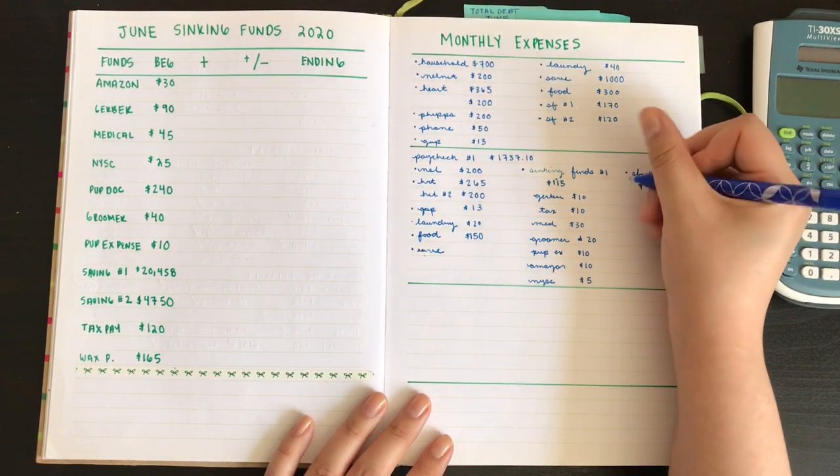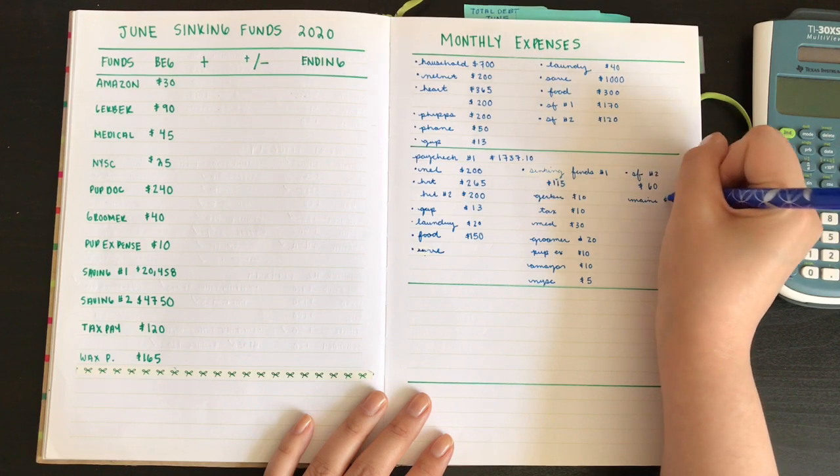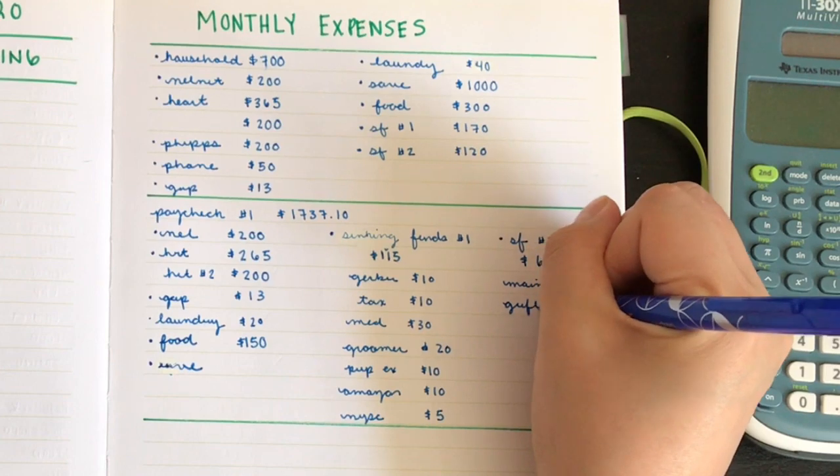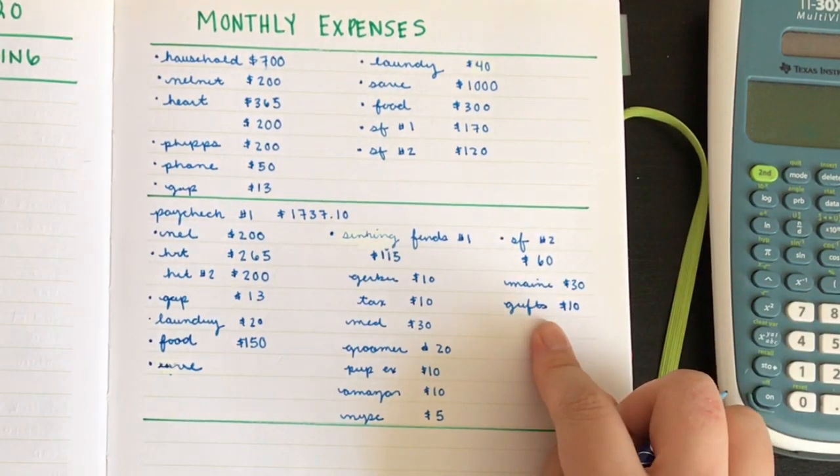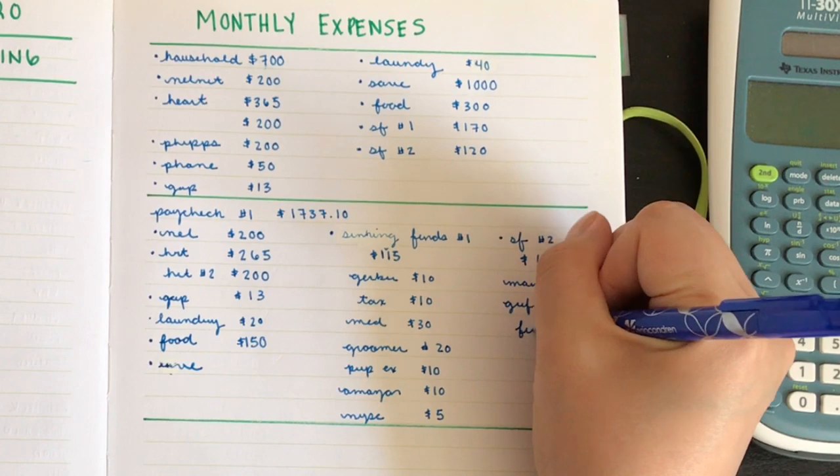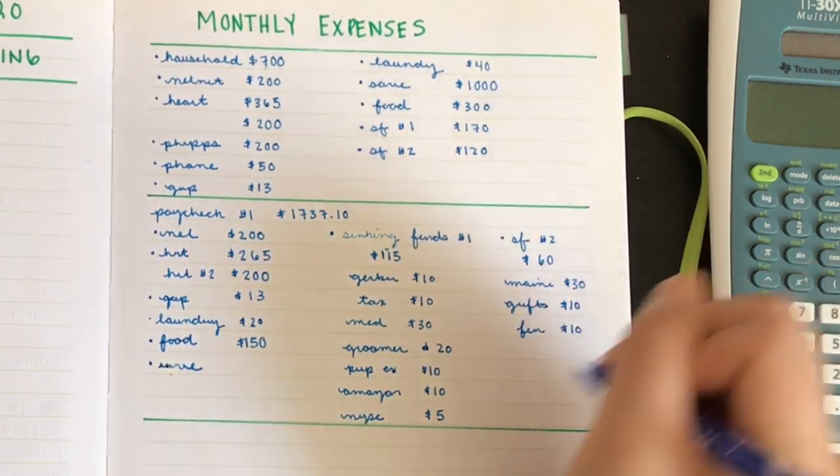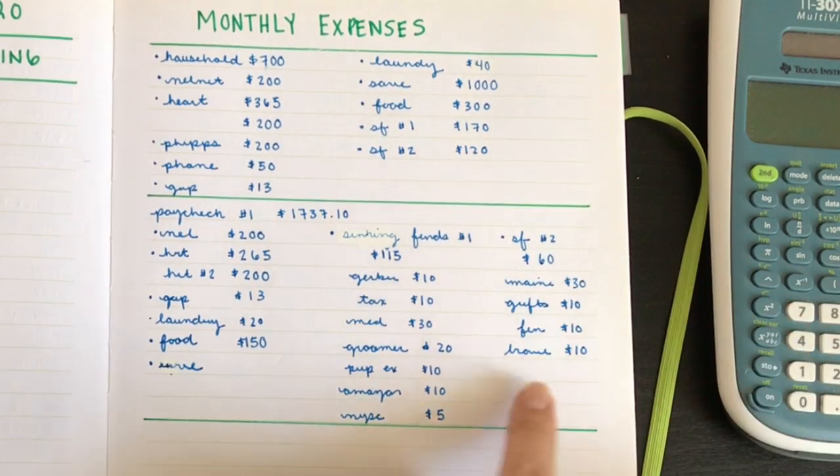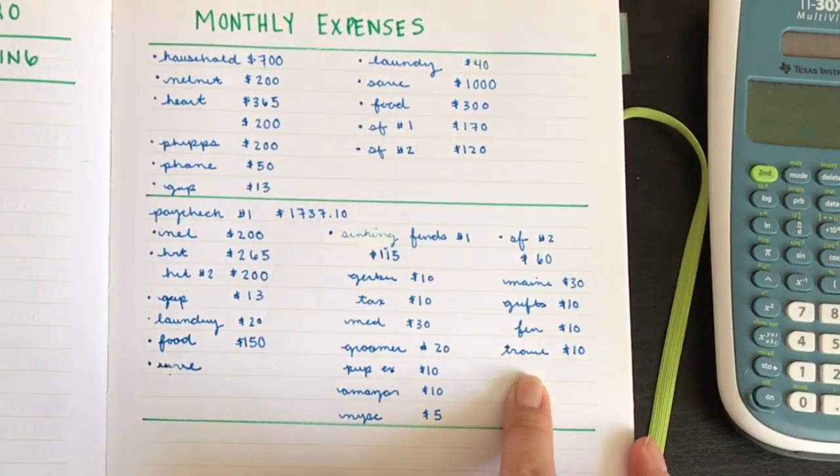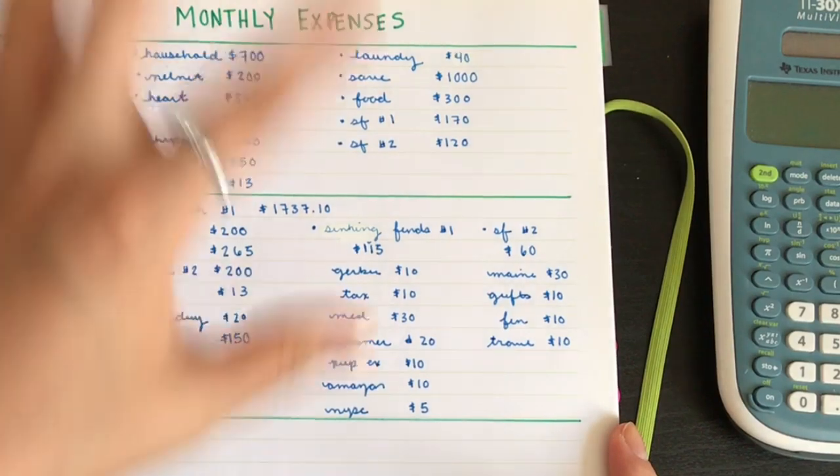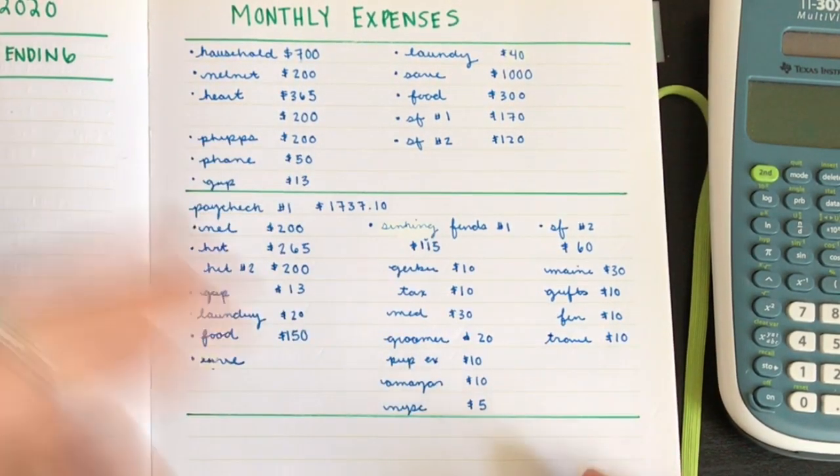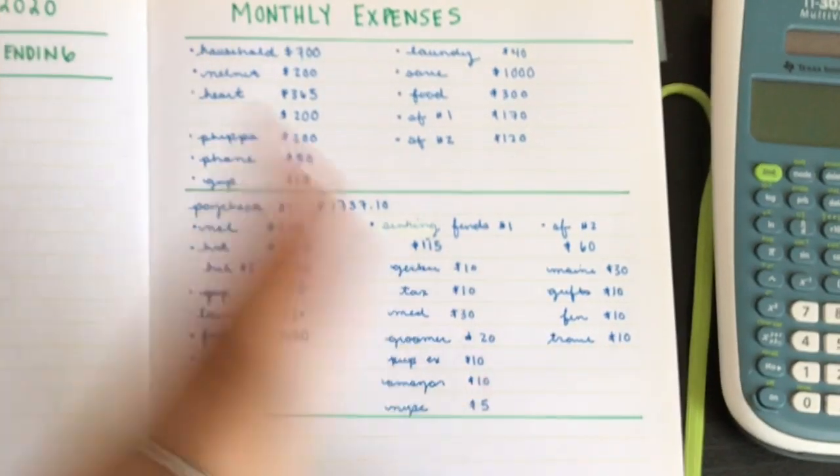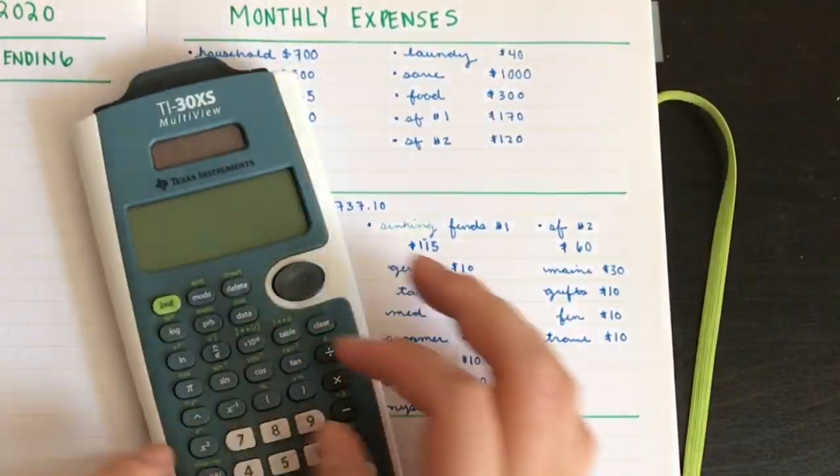Then I have my sinking funds number two. And that gets a total of $60. So for that, I have maintenance. And that gets $30. Then I have gifts. That gets $10. I also want to increase this one. Fun, I also want to increase. That gets $10. Travel gets $10. I definitely want to increase this. I've been binge watching a whole bunch of budget videos. And people put like $50, $100 in travel. And I'm like, I want to be there one day.